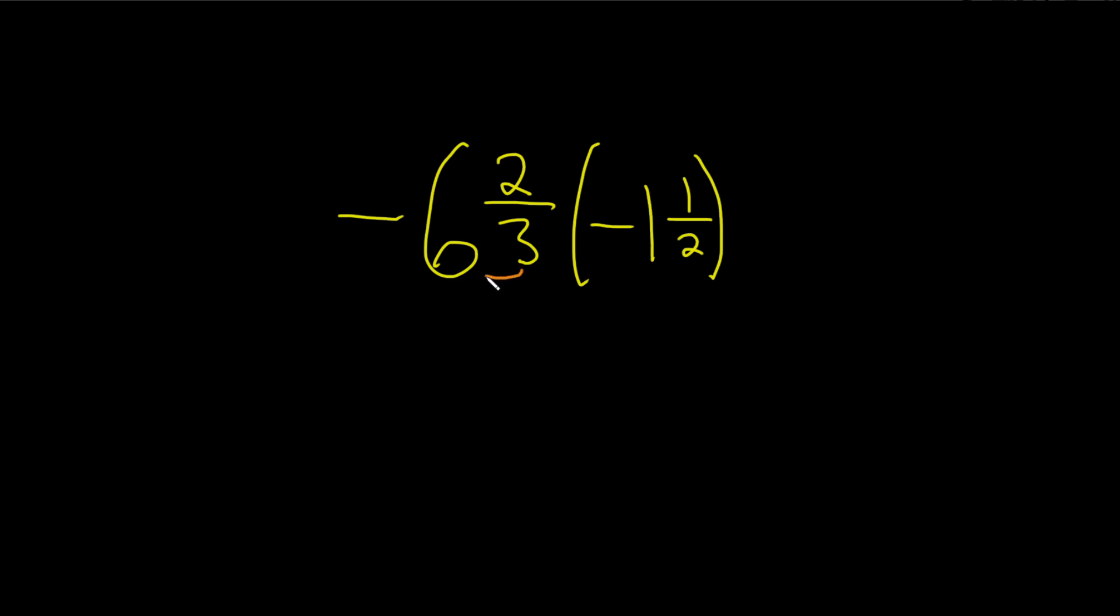We take the 3 and we multiply it by the 6. So 3 times 6 is 18. And then we just add the top number, so plus 2, and that gives us 20. So we can write this as 20 over 3, and we just keep the negative sign. It just kind of hangs out.